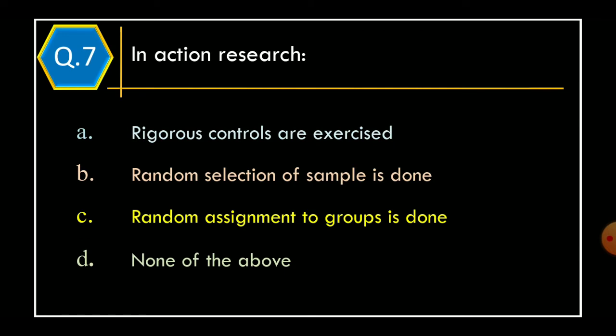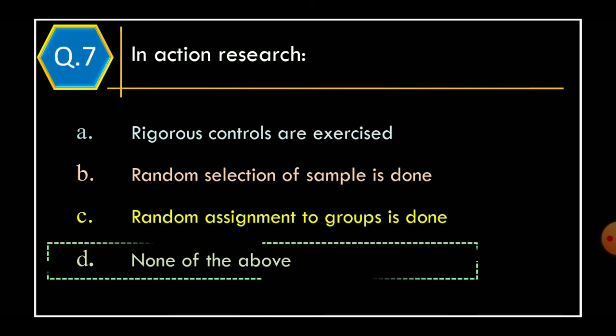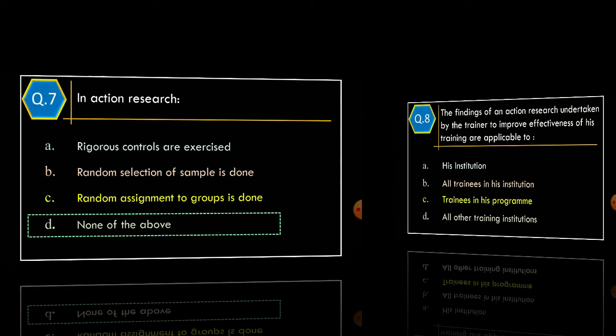Question 7: In action research. Option A: rigorous controls are exercised. Option B: random selection of sample is done. Option C: random assignment to groups is done. Option D: none of the above. And correct option is Option D: none of the above.